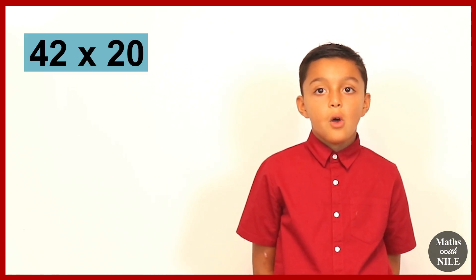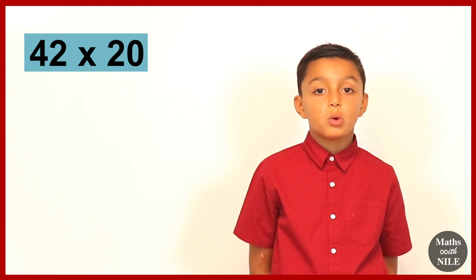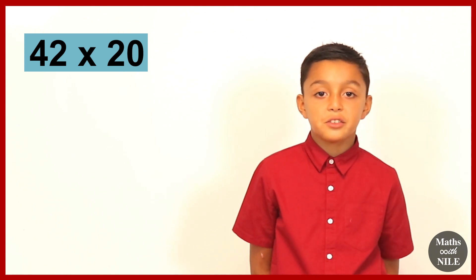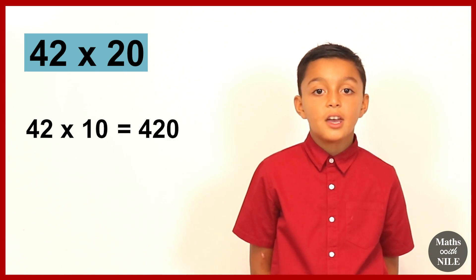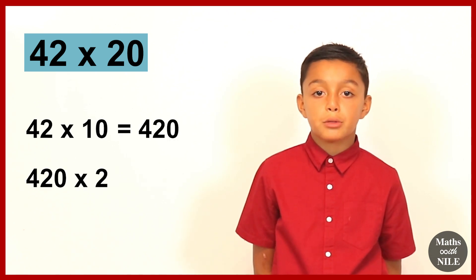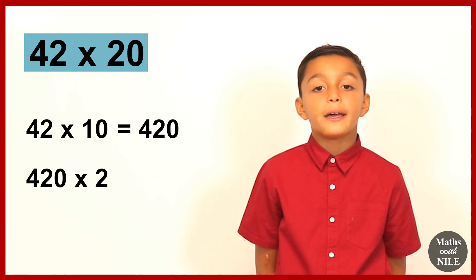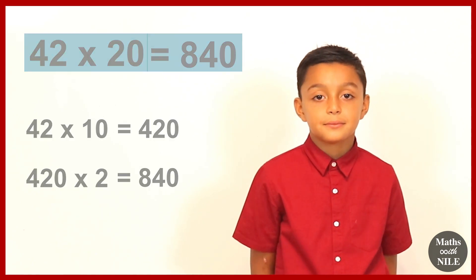How would you do 42 times 20? 42 times 20. So we'll do 42 times 10, which is 420. And then 420 times 2 is 840. Excellent, Niall.